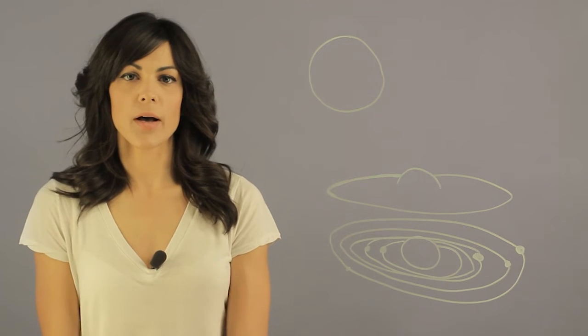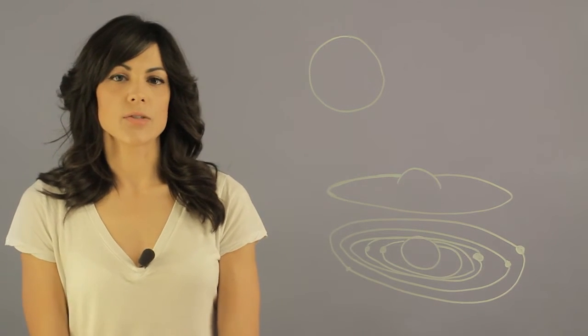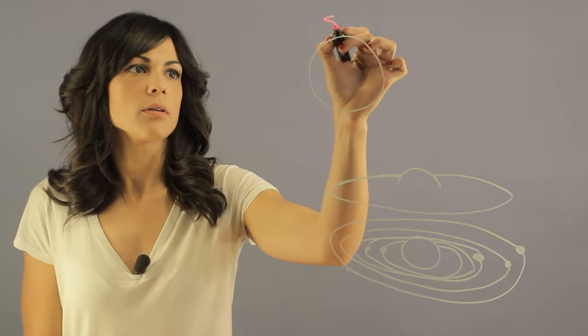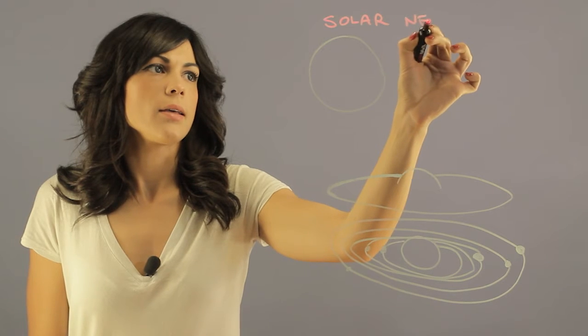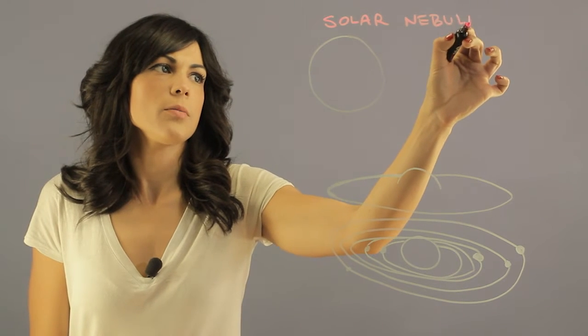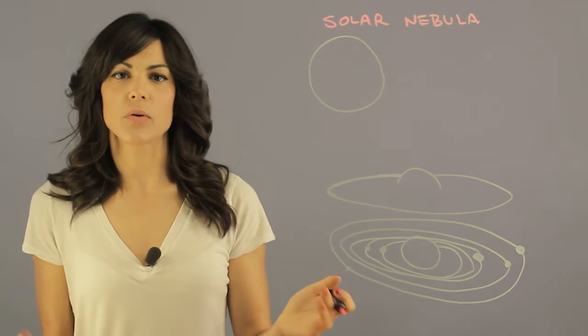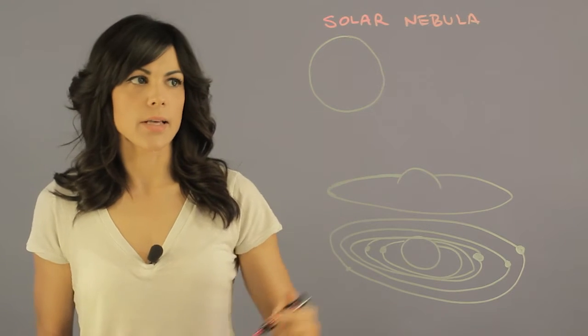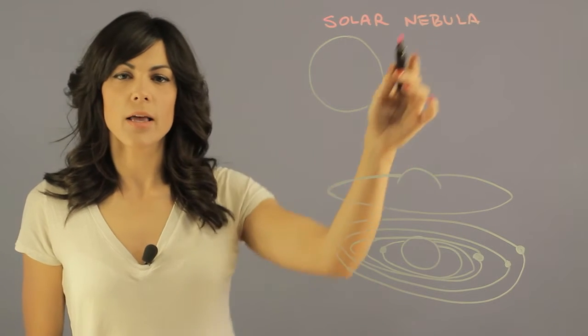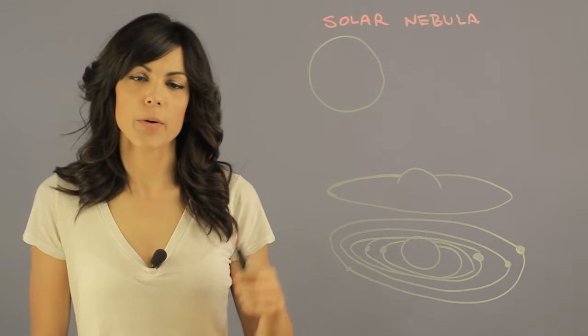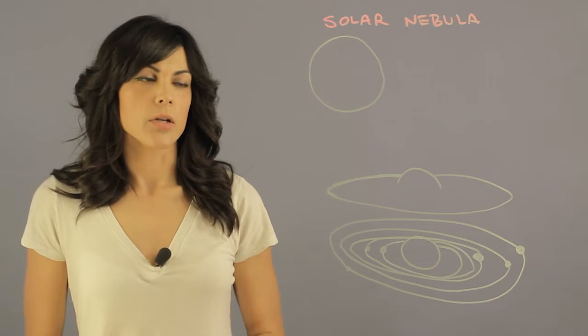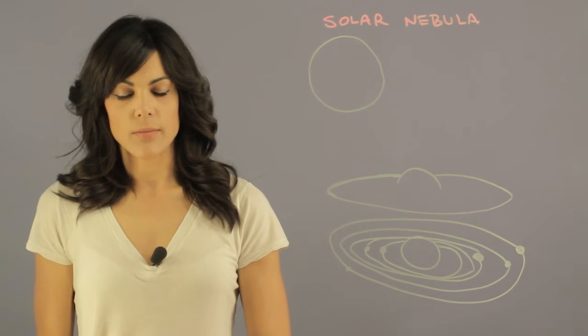So the solar system formation theory is the solar nebula theory, and this theory begins with, let's say, you have a spherical cloud or an irregular cloud in space, and then somewhere from space comes a shockwave. Most likely the shockwave comes from a supernova, some type of explosion nearby.